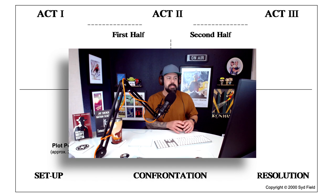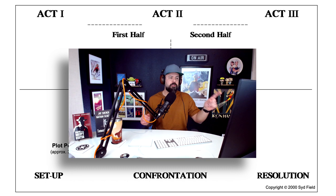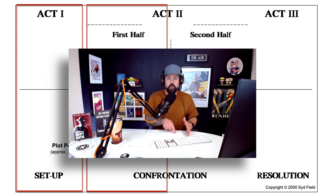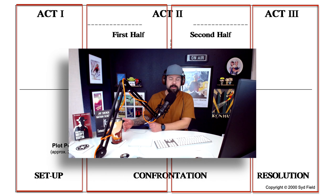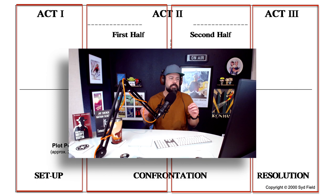Let's pretend a movie is two hours — that's a pretty standard length. In a two-hour long movie, you can break it up into four parts that align with the paradigm. The first half hour is act one. The second half hour is the first half of act two. The third half hour is the second half of act two. And the last half hour is generally act three. That's generally how these things tend to align.